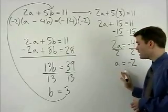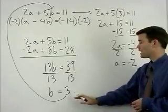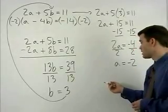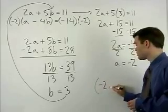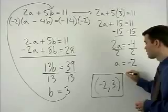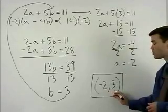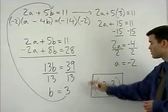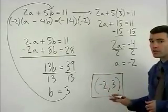Since a equals negative 2 and b equals 3, our answer is the ordered pair negative 2, 3. Notice that a comes before b in our answer. Always put your answer in alphabetical order.